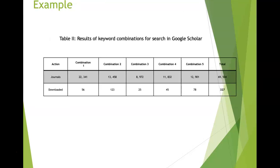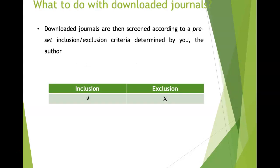Here's an example of results of keyword combinations for a search in Google Scholar, which you can include in your systematic review. It shows the journals, keyword combination one, combination two, etc., the number of journals, and the number downloaded — so the reader knows exactly what you did and how you did it.